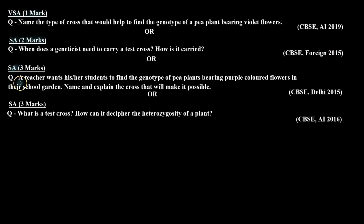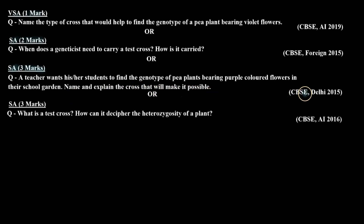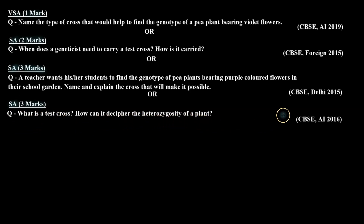The next type is a short answer type question for three marks: 'A teacher wants his or her students to find the genotype of pea plants bearing purple colored flowers in their school garden — name and explain the cross that will make it possible.' It was asked in the CBSE board Delhi examination 2015. The last type is also a three-mark question: 'What is a test cross and how can it decipher the heterozygosity of a plant?' — asked in CBSE board All India examination 2016.